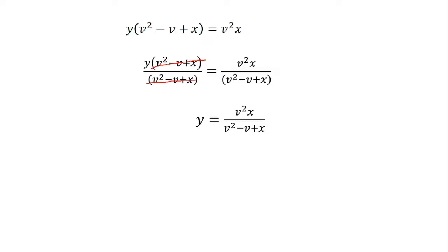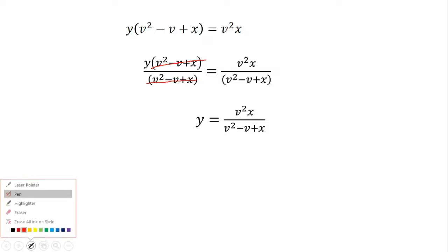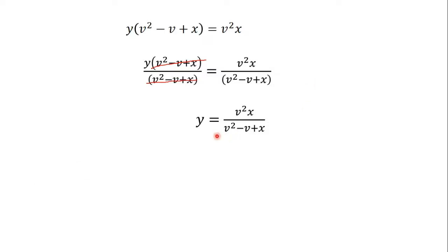Now someone may ask: why are we not canceling the v squared in the numerator with the v squared in the denominator? If you watch the video on division of algebraic expressions, you will understand why you don't cancel them. I advise that you watch that video to get a clear understanding of why we are not doing that cancellation.